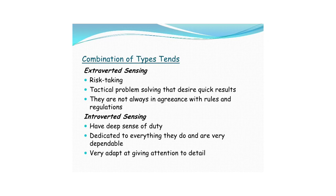Let's jump over to Google just so we know how to do it wrong. SE: risk-taking, tactical problem-solving that desires quick results. What the hell does that mean? They're not always in agreeance with rules and regulations. Introverted sensing: have a deep sense of duty. Dedicated to everything they do and are very dependable. I know an SI guy and he's not dedicated to everything he does and is not dependable. So does he not have SI? We get what it's saying, but this is mud — it's slippery. You go to try and build on this and it breaks down so fast.